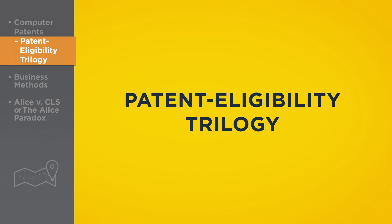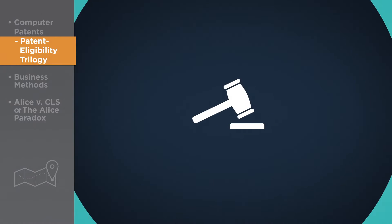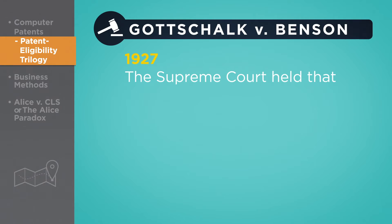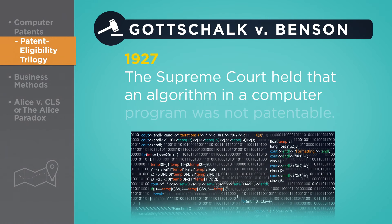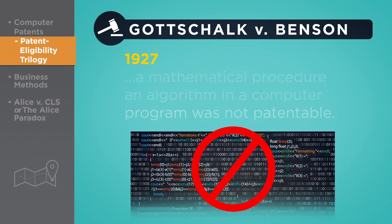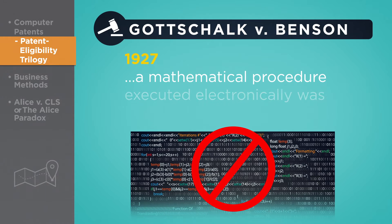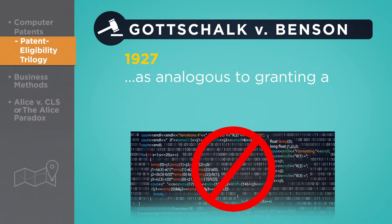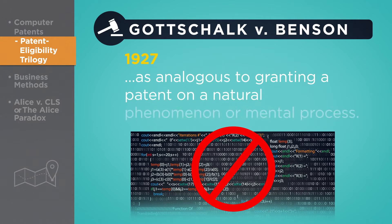These cases are often called the Patent Eligibility Trilogy. In 1972, Gottschalk v. Benson, the Supreme Court held that an algorithm in a computer program was in and of itself not patentable. In this case, a mathematical procedure executed electronically was too similar to long division with paper and pencil. The court saw such a patent as analogous to granting a patent on a natural phenomenon or mental process.